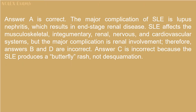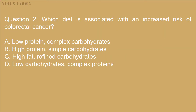Answer A is correct. The major complication of SLE is lupus nephritis, which results in end-stage renal disease. SLE affects the musculoskeletal, integumentary, renal, nervous, and cardiovascular systems, but the major complication is renal involvement. Answers B and D are incorrect. Answer C is incorrect because SLE produces a butterfly rash, not desquamation.